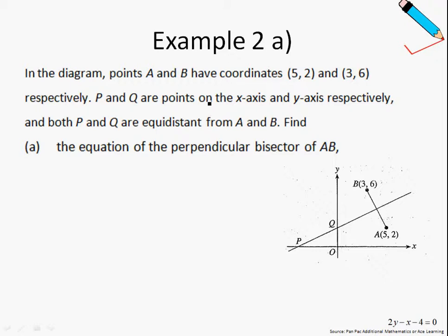Let's go ahead and look at example 2a. In the diagram, we have points A and B with the coordinates (5, 2) and (3, 6) respectively. Points P and Q are on the x-axis and y-axis respectively. Also, points P and Q are equidistant from points A and B. Find the equation of the perpendicular bisector of AB.